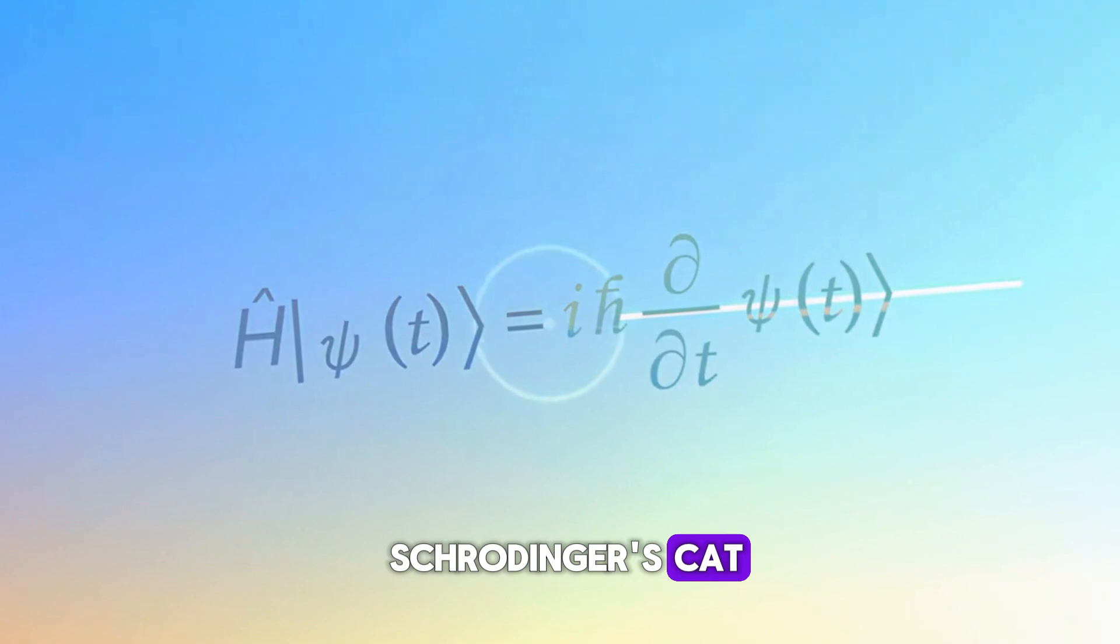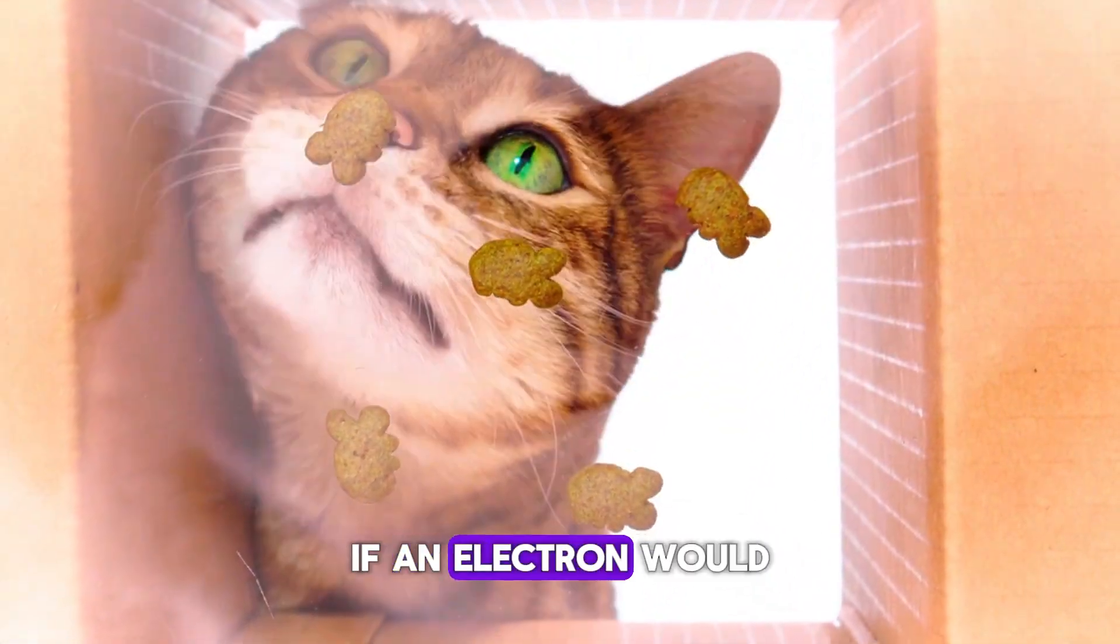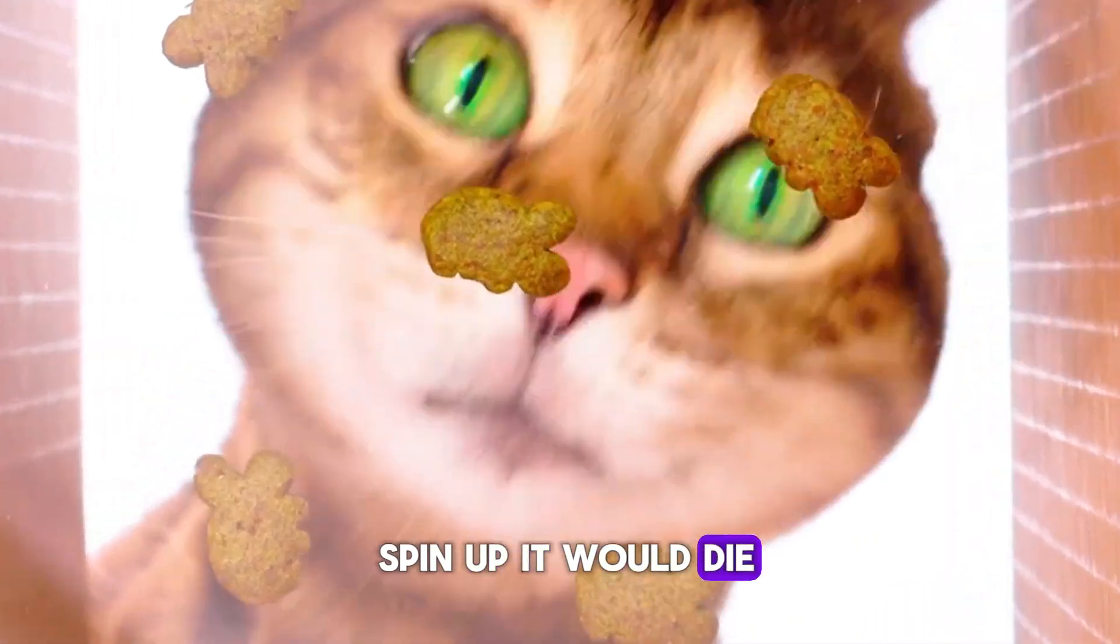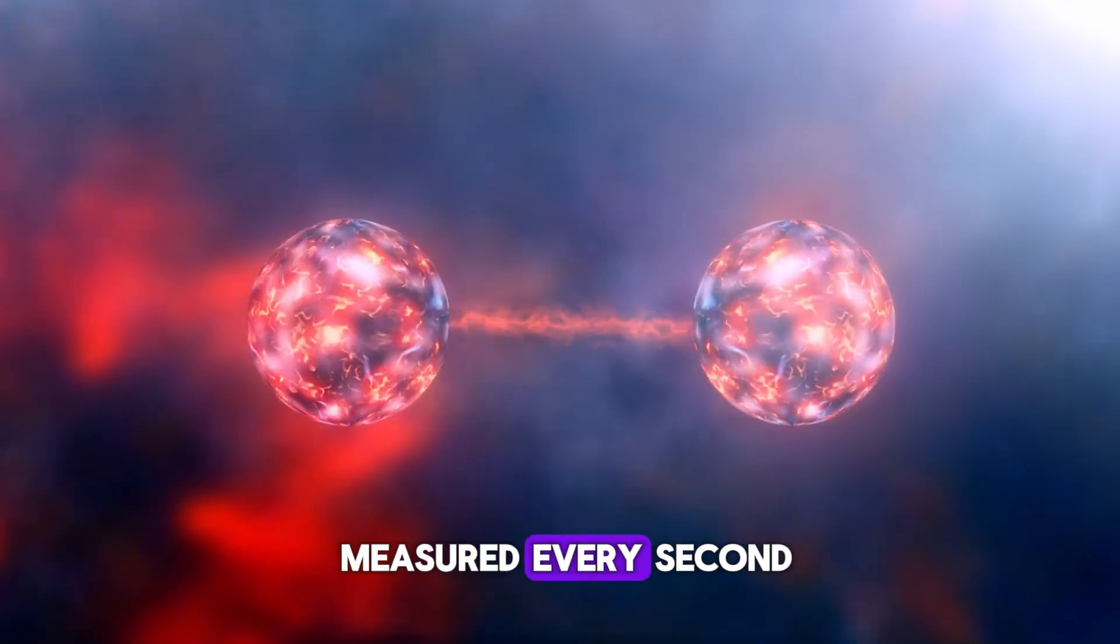Do you remember Schrödinger's cat? Me neither. Briefly, if you put it in a box with a bomb that would go off if an electron would spin up, it would die. If the electron spins down, nothing happens. The electron is being measured every second.